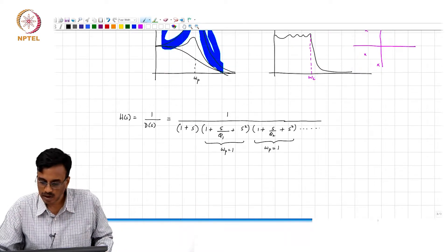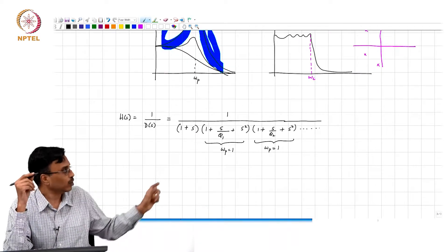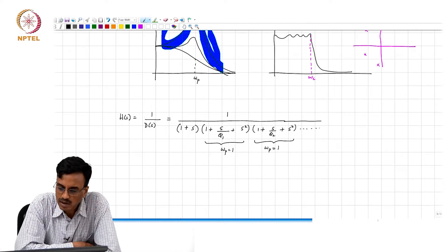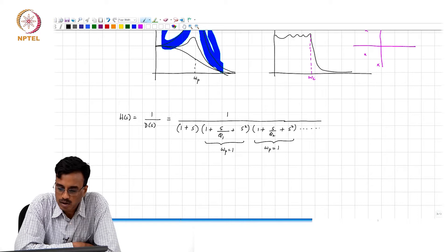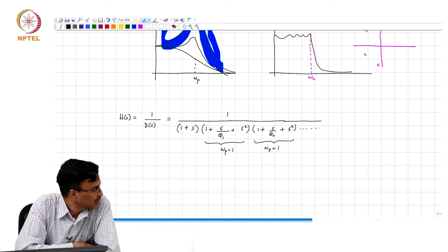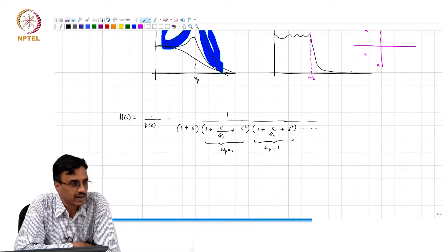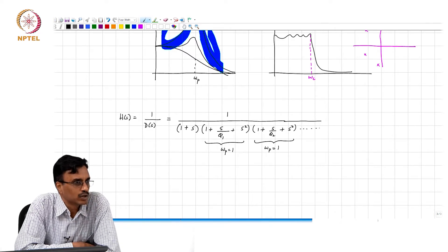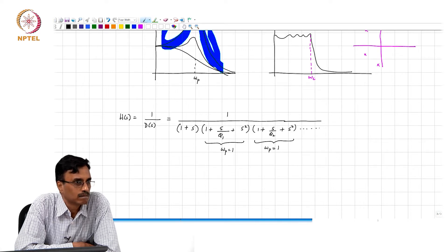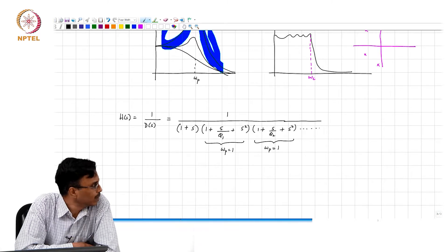Now, the question is, we have decomposed our filter transfer function into product of first order and second order sections, and therefore we should be able to implement it.